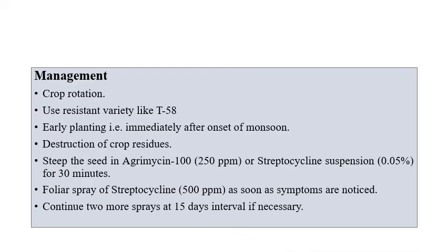For management of bacterial blight, crop rotation and use of resistant varieties such as T-58 is recommended, along with early planting at the immediate onset of monsoon. Destroying crop residues and steeping seeds with Agromycin (an antibiotic) and Streptocycline suspension at 0.05% for 30 minutes is advised. Foliar application of Streptocycline at 500 ppm should be done as soon as symptoms are noticed, with two sprays at 15-day intervals. If necessary, an additional spray can be applied.